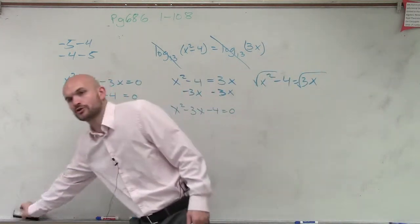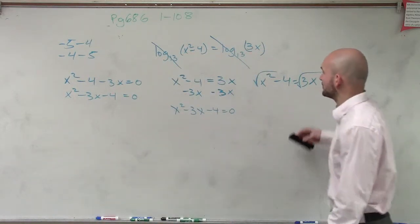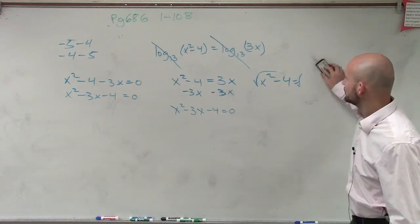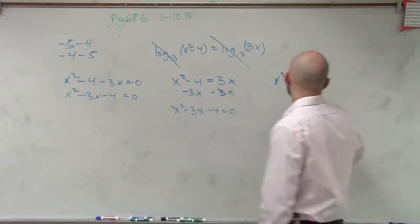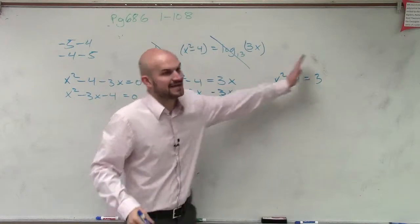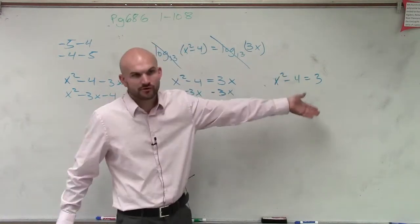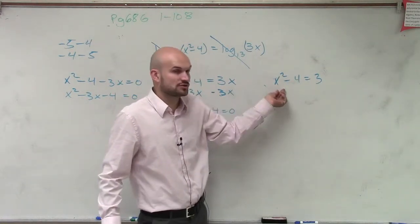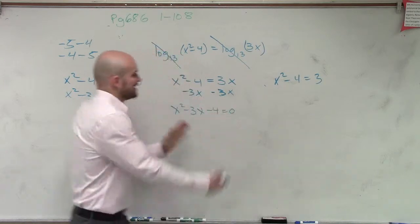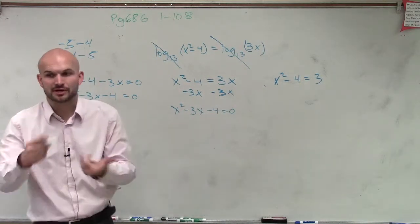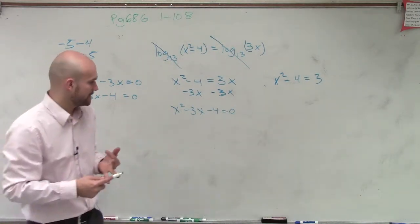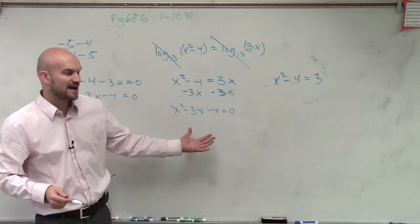The square root property would work if it just looked like this. Then you just add the 4, and then you can take the square root. That only works when there's a square term, but it's only one of them. Now that we have two, we have a square term and a linear term, we have to either complete the square, factor, or quadratic formula.